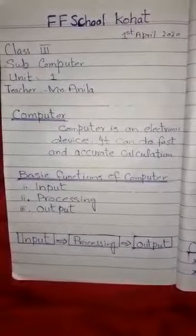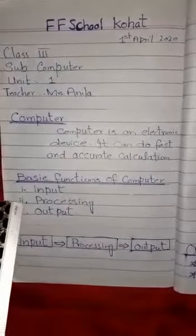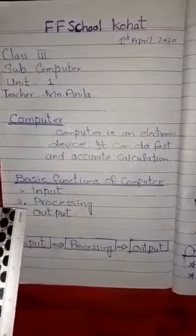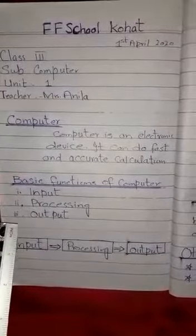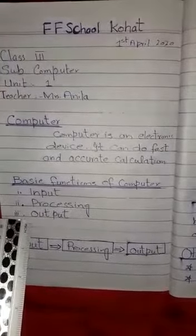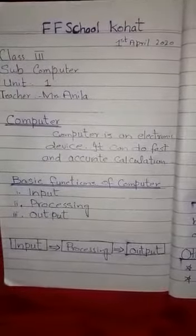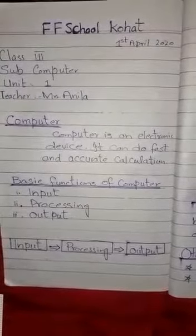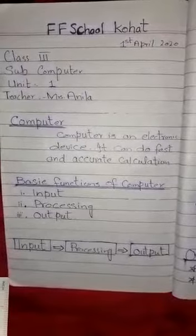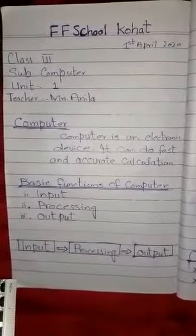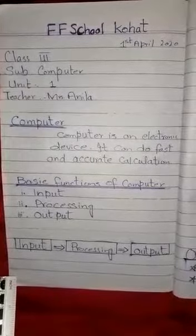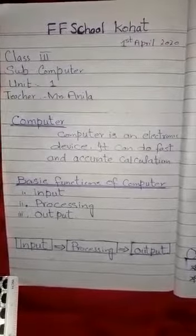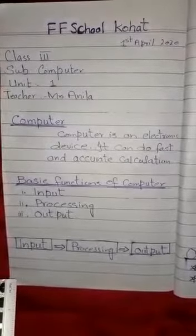Any computer performs three basic functions: input, processing, and output. These functions are performed by different parts and helping devices of the computer. The devices performing these functions are accordingly called input devices, processing device, and output device.